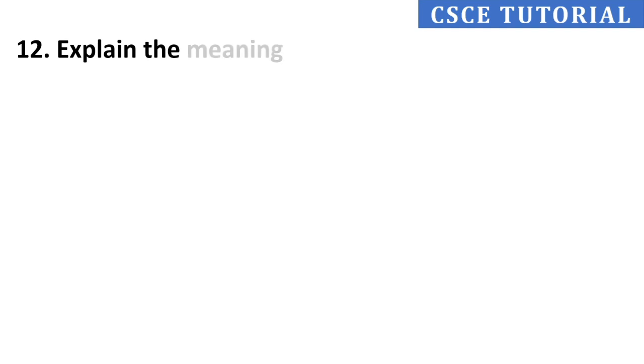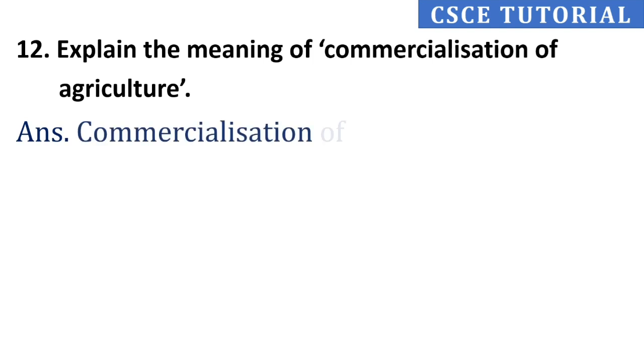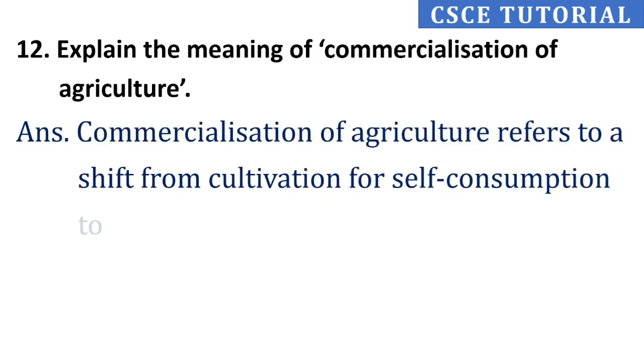Twelfth question: Explain the meaning of commercialization of agriculture. Its answer is, commercialization of agriculture refers to a shift from cultivation for self-consumption towards cultivation for the market.